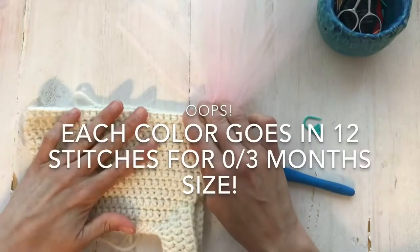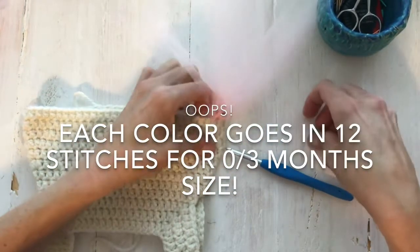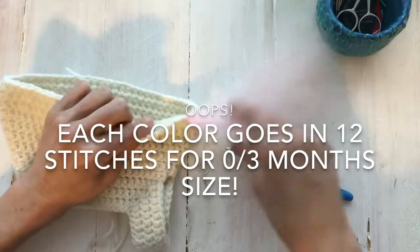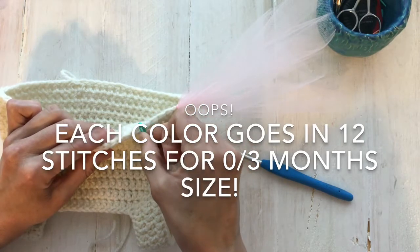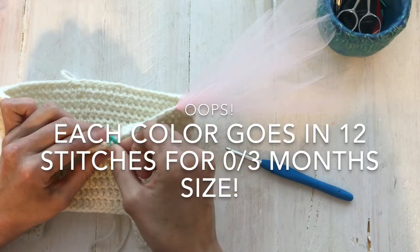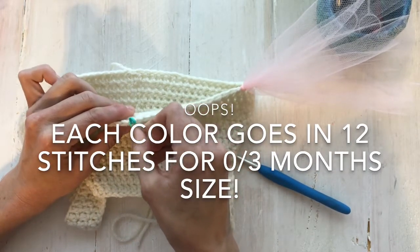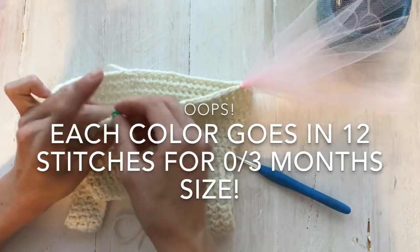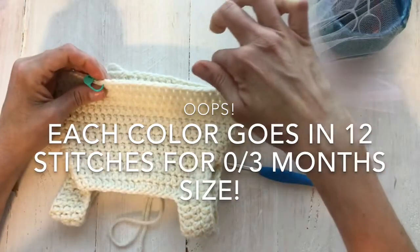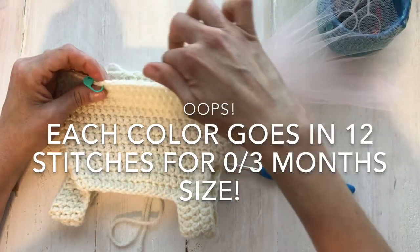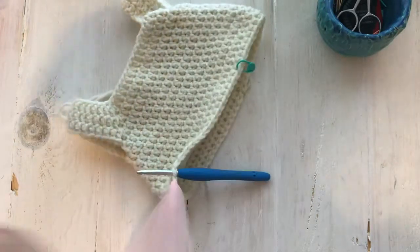Remember, each color is going to cover 18 stitches. So this is my first stitch of pink. I'm going to count over. So that's 1, 2, 3, 4, 5, 6, 7, 8, 9, 10, 11, 12, 13, 14, 15, 16, 17, 18, 19. So this is the 19th stitch here. So I'll go ahead and continue placing pink in these stitches here.